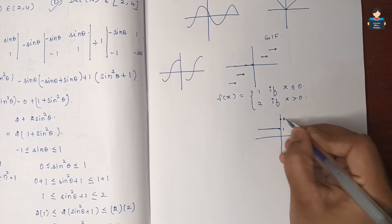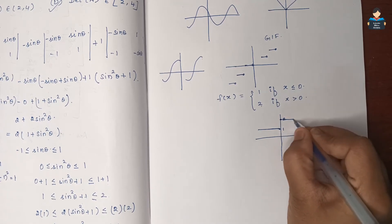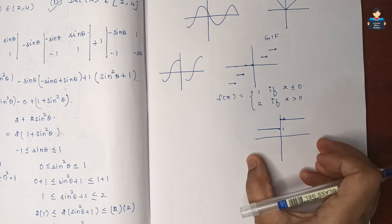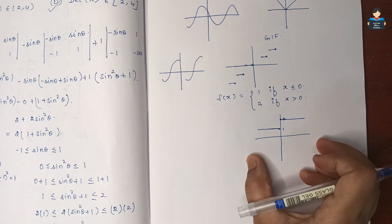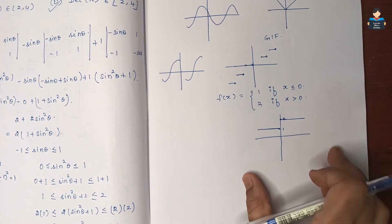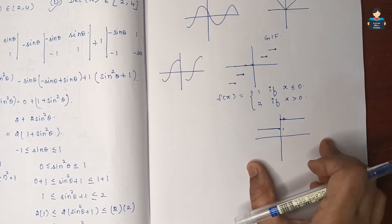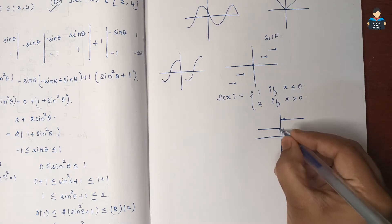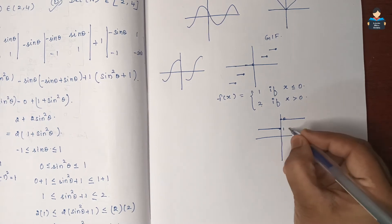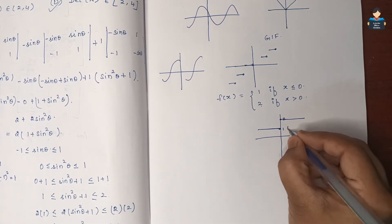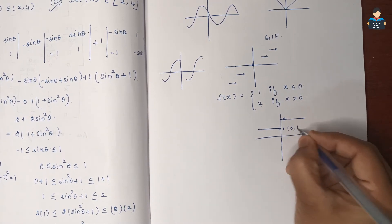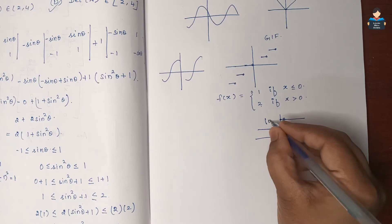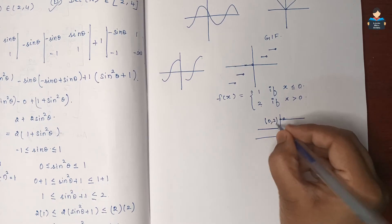This value is 1 and this value is 2. So, this is also an example of discontinuity — this function is not continuous. Here, the point is at (0,1) and (0,2).